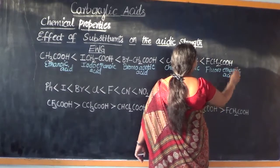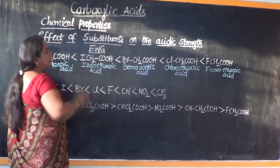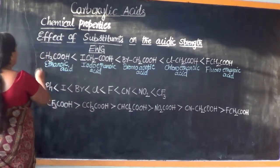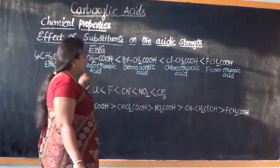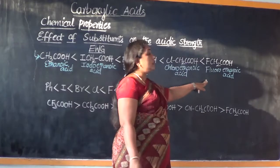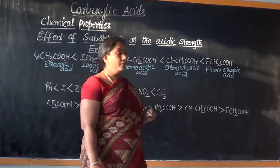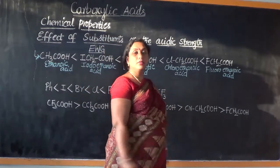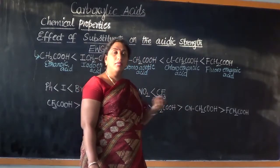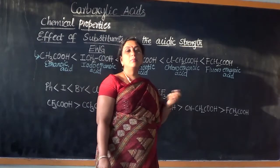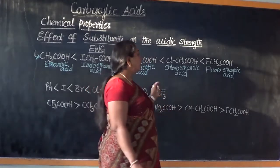Here is an important point of focus. If you observe from ethanoic acid through to chloroacetic acid, excepting ethanoic acid, all others — iodoethanoic acid, bromoethanoic acid, chloroethanoic acid — all of them contain a halogen. But still, why is there a difference in their acidic strength? If they are all members of the halogens, they should have the same acidic strength or the same pKa value. Why do we find a difference in their acidic strength?